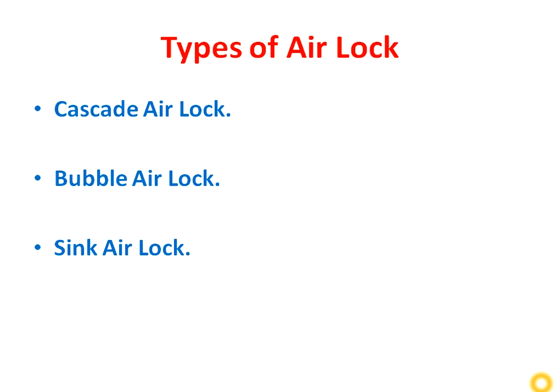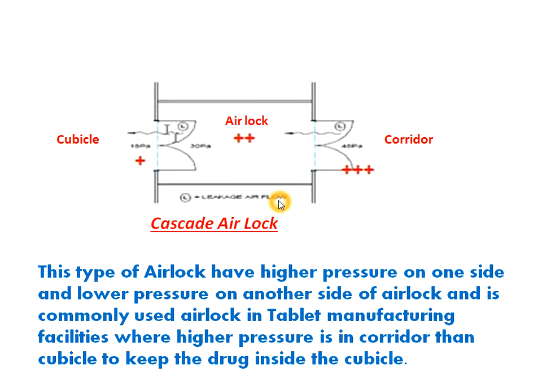Airlocks are mainly of three types: first is cascade airlock, second is bubble airlock, and third is sink airlock. Now we will see all three in detail, one by one.